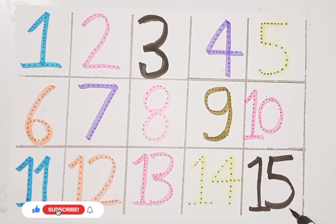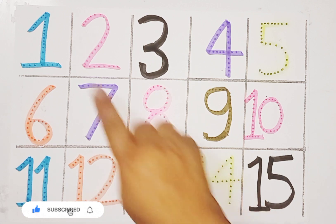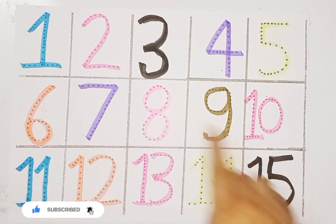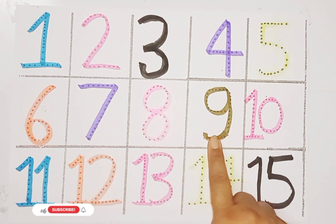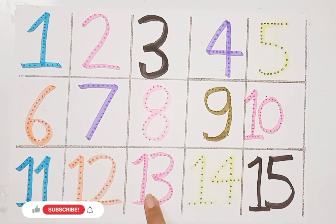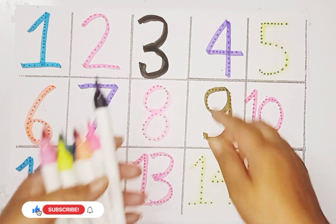So kids, today we learned 1 to 15 counting: 1, 2, 3, 4, 5, 6, 7, 8, 9, 10, 11, 12, 13, 14, 15.